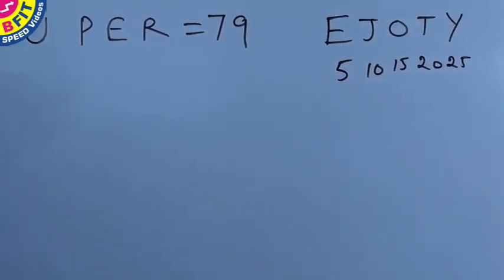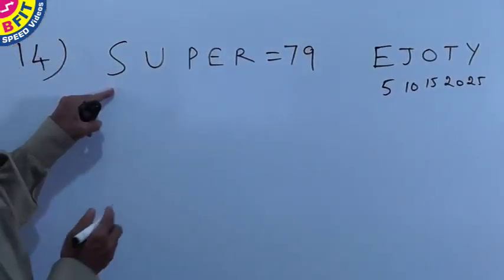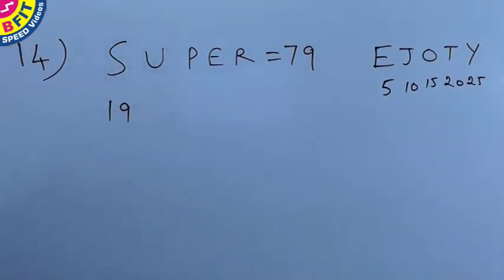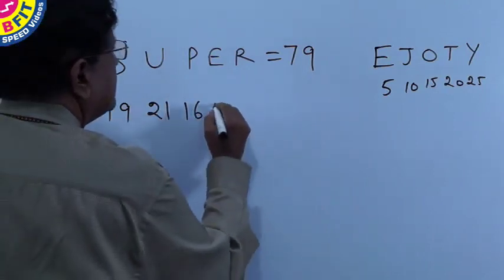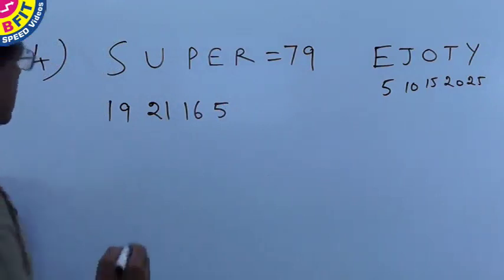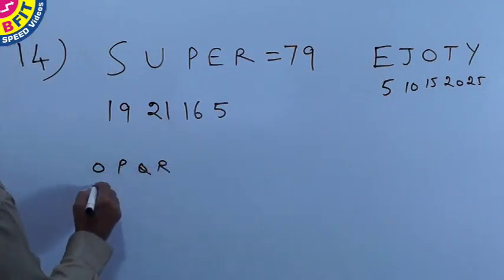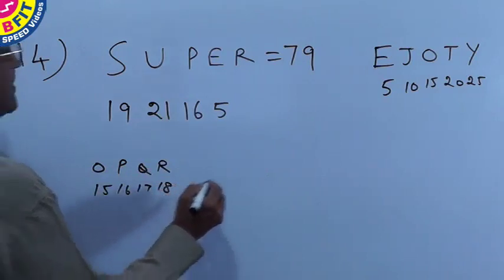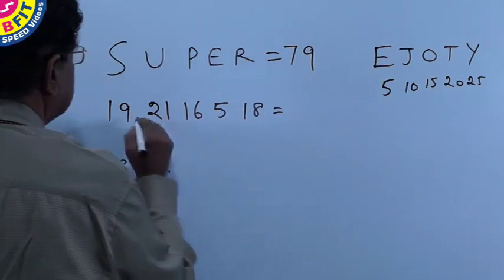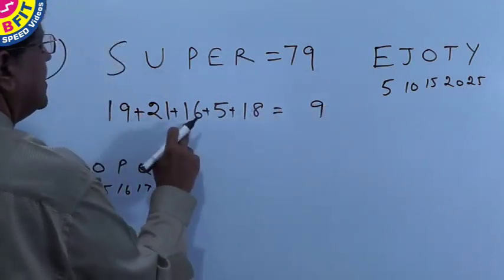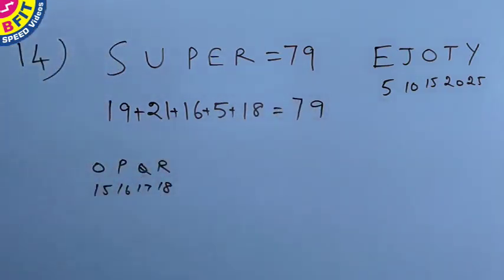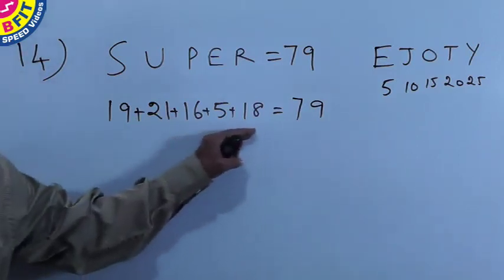Now let us verify SUPER. S: using PQRST, T is 20, so S is 19. U: PQRSTU, so U is 21. P: MNOP, O is 15, so P=16, Q=17, R=18. R is 18. If you add all these positional values, you get 79. So what they have done is found out the positional value of each alphabet and added them up to arrive at the answer.